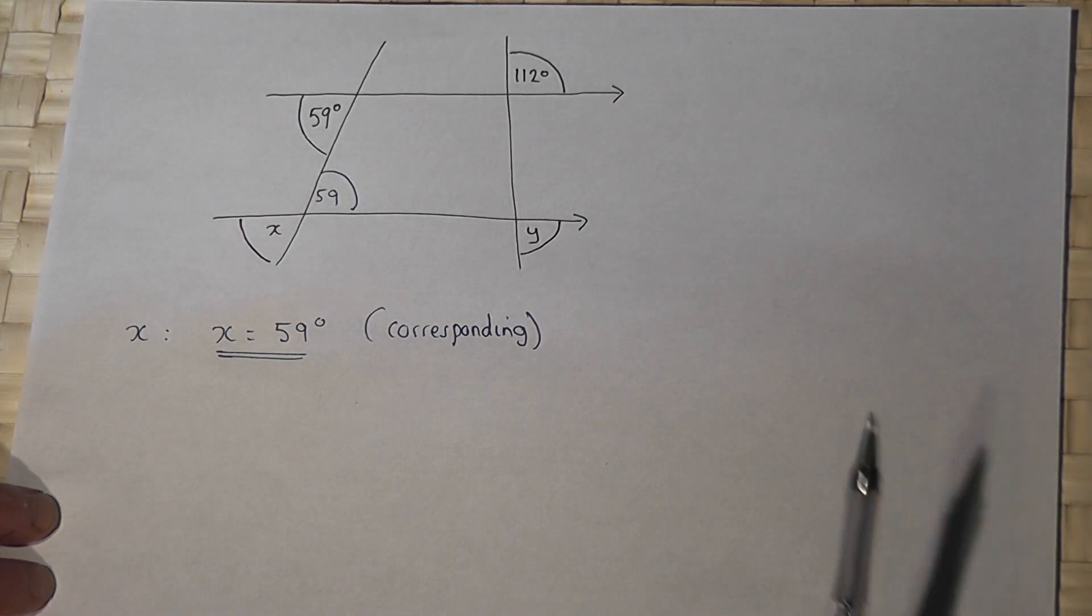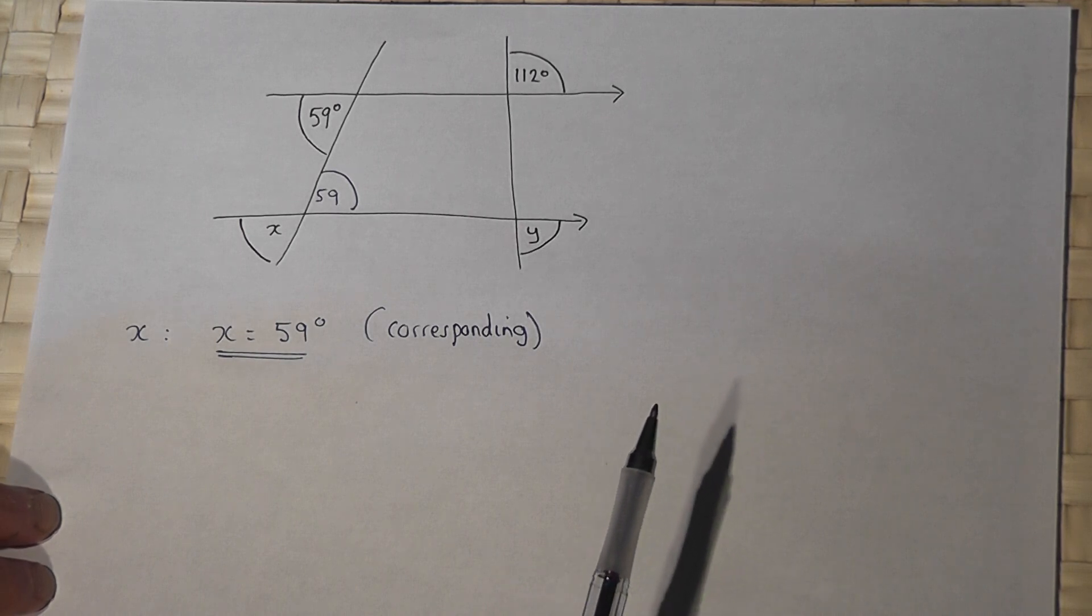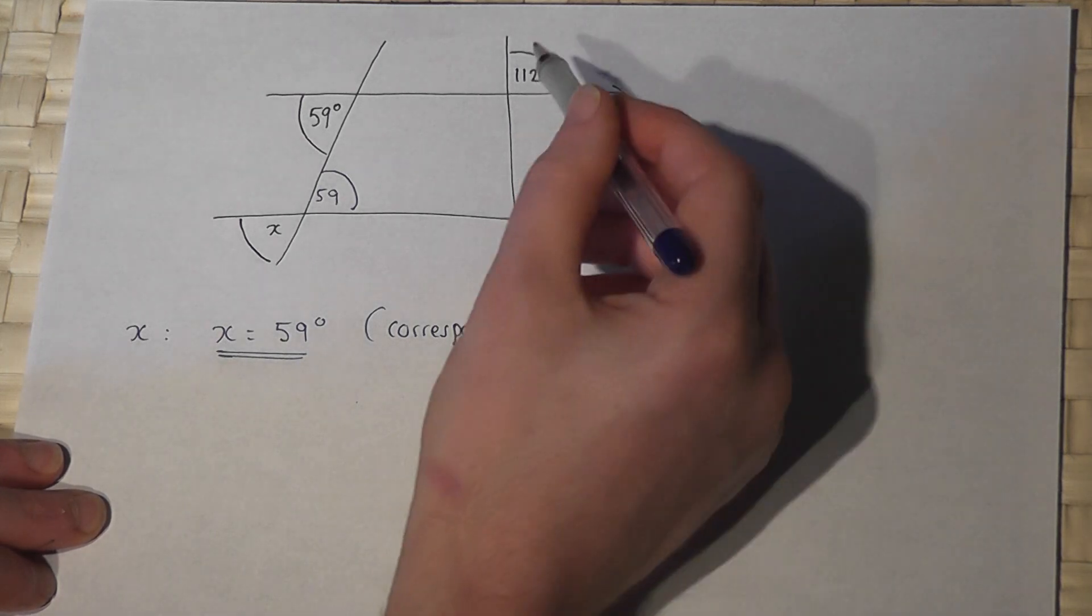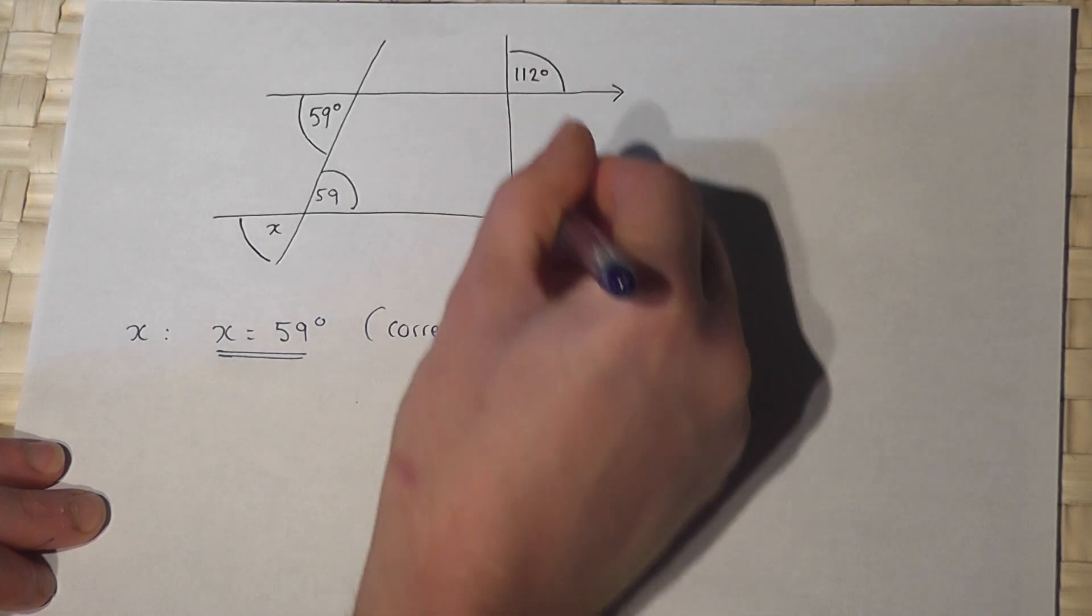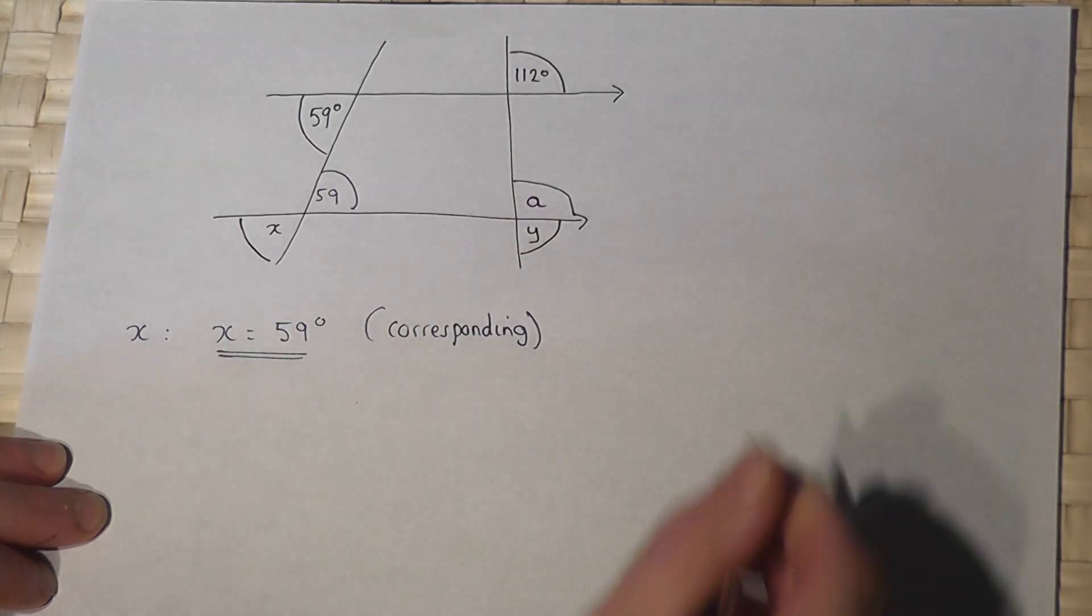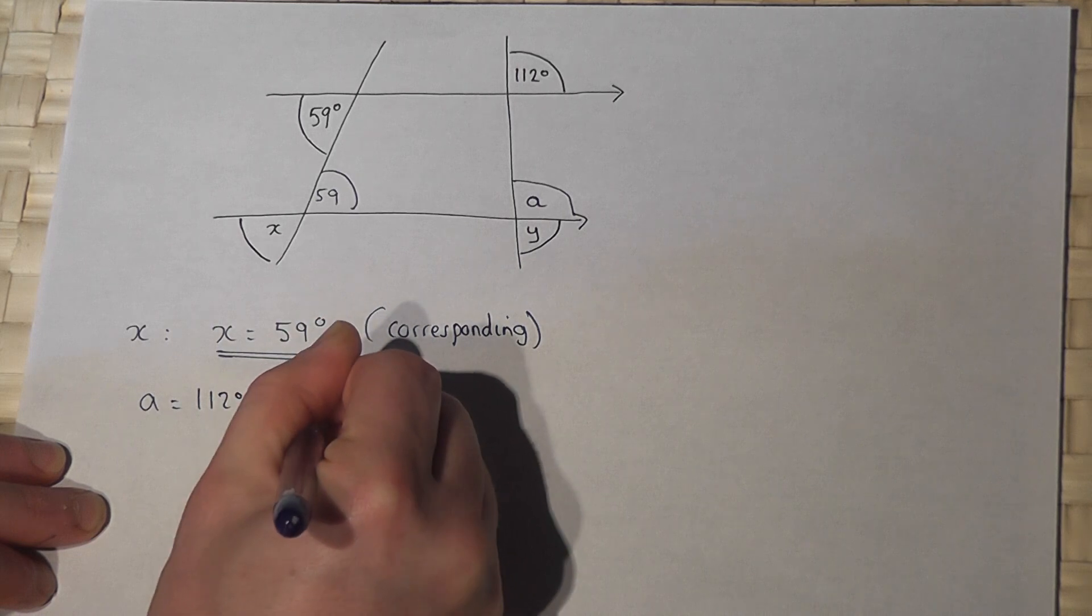Now then, to find Y requires an extra step and there's lots of options here. Option one is to say these two angles here are corresponding. So if I call that angle A, then A equals 112 degrees because it's corresponding.